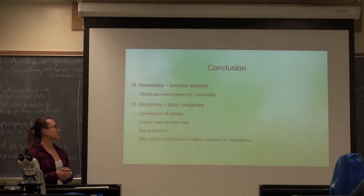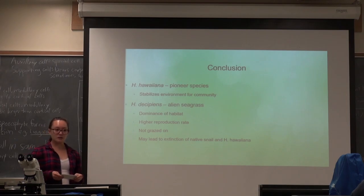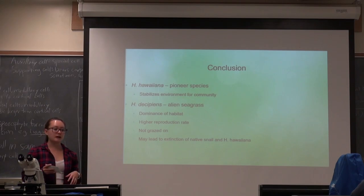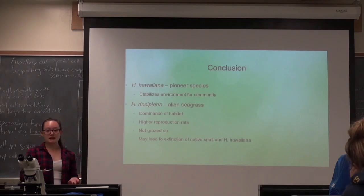They concluded from this experiment that Halophila hawaiiana is very important for the benthic community and the native sea snails since that's its food. The Halophila decipiens alien seagrass is dominating this habitat, and it's really important that we try not to let it do that, since if we get rid of the native species of seagrass, it'll basically wipe out the native snail and make it extinct since it doesn't have any food.